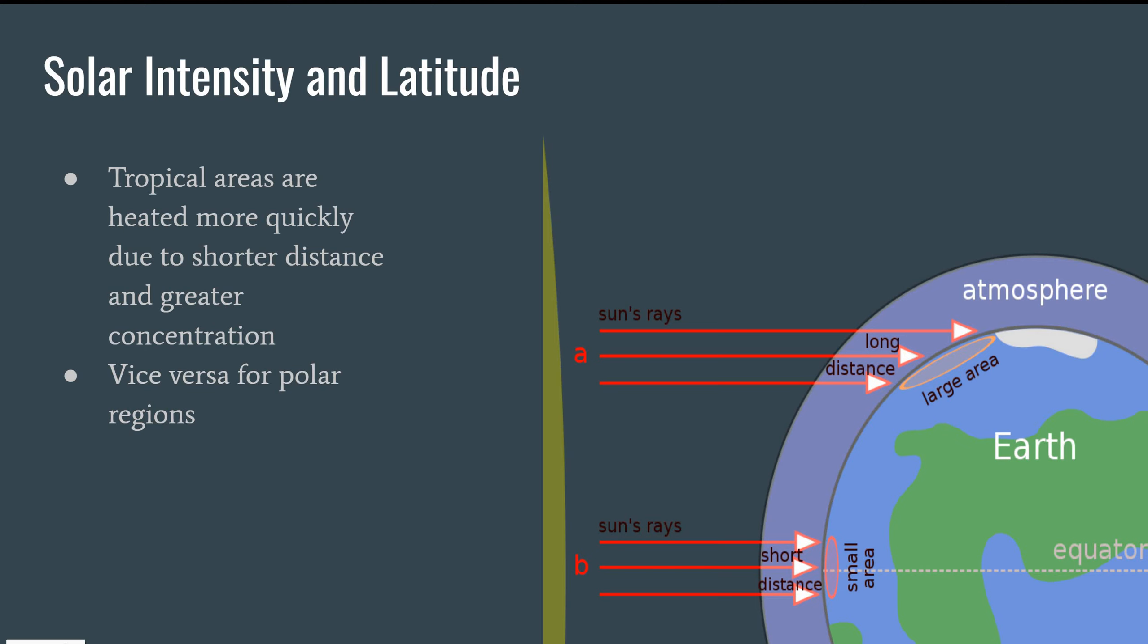We refer to this phenomenon as insolation. The amount, basically a measure of how many sun rays are hitting the earth at a given latitude, is what we refer to as insolation.